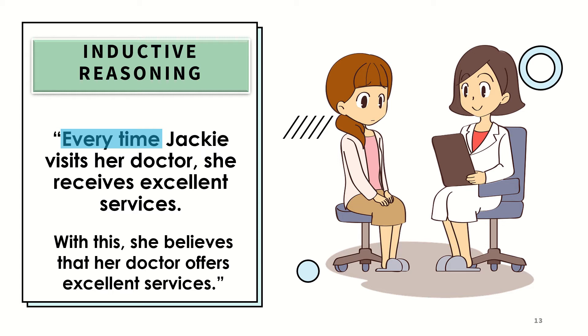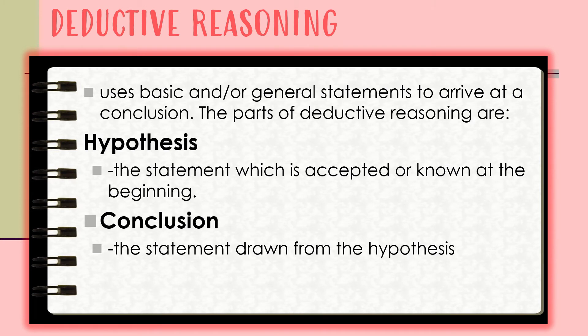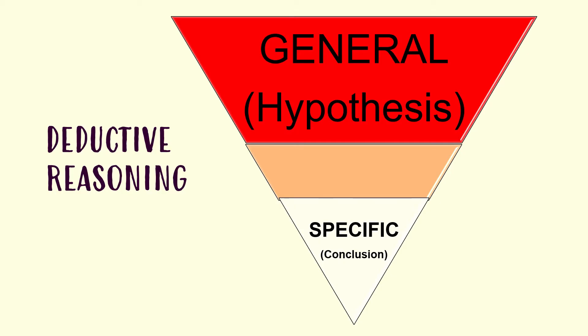Now let us proceed to the second terminology: deductive reasoning. Deductive reasoning uses basic and general statements to arrive at a conclusion. The parts of deductive reasoning are: first, the hypothesis — it is the statement which is accepted or known at the beginning — and the conclusion, which is the statement drawn from the hypothesis. Unlike inductive reasoning, which is from specific to general, deductive reasoning, on the other hand, is from general to specific.